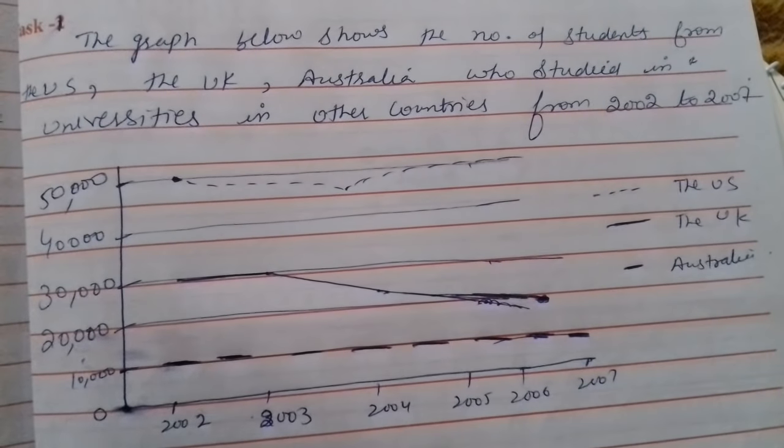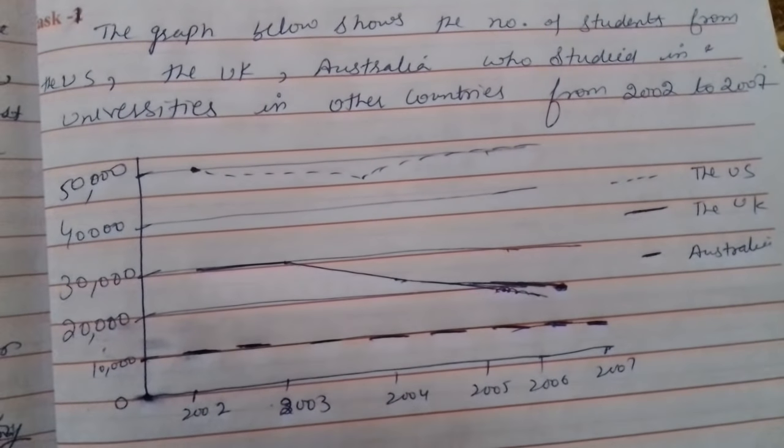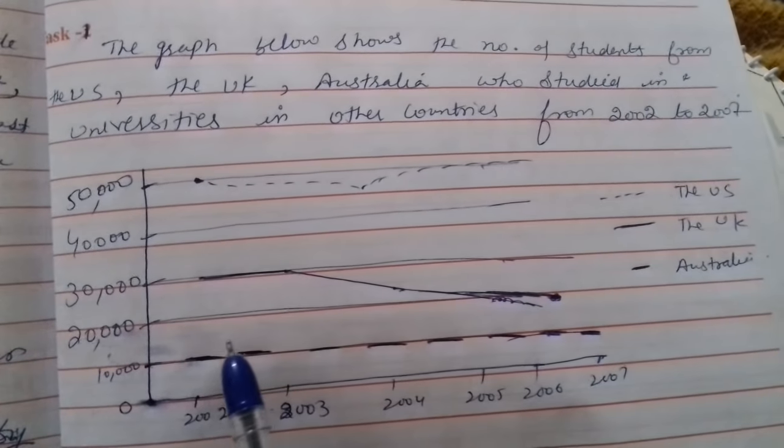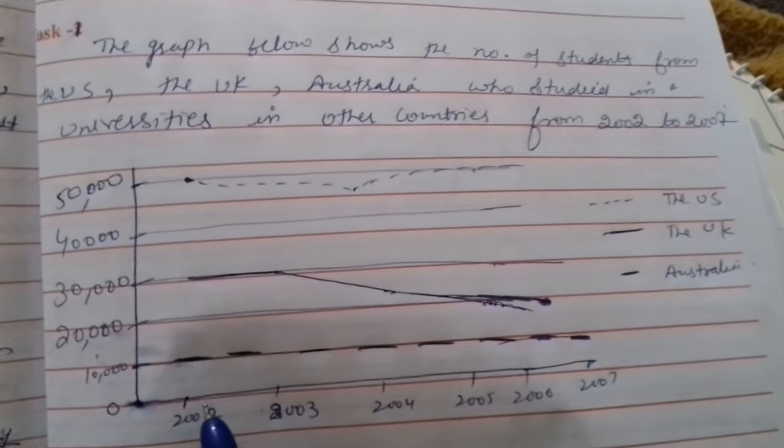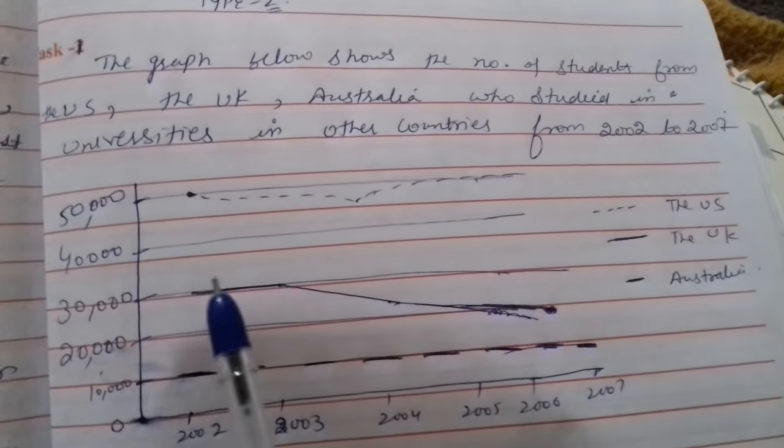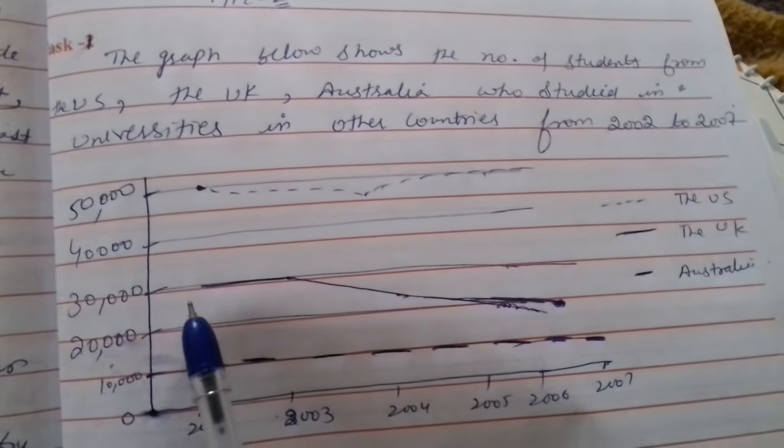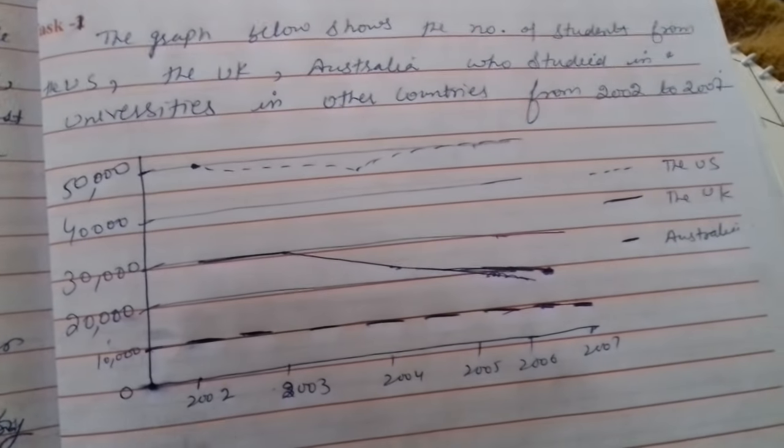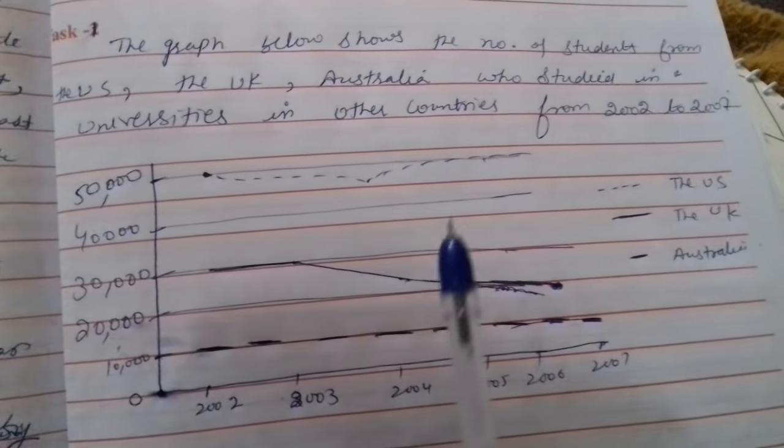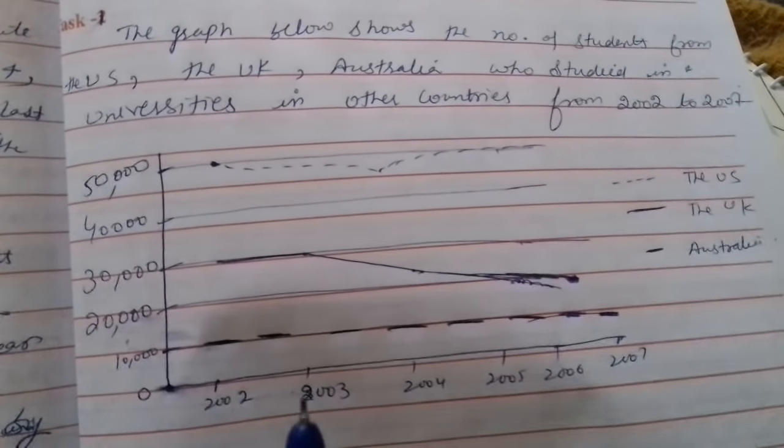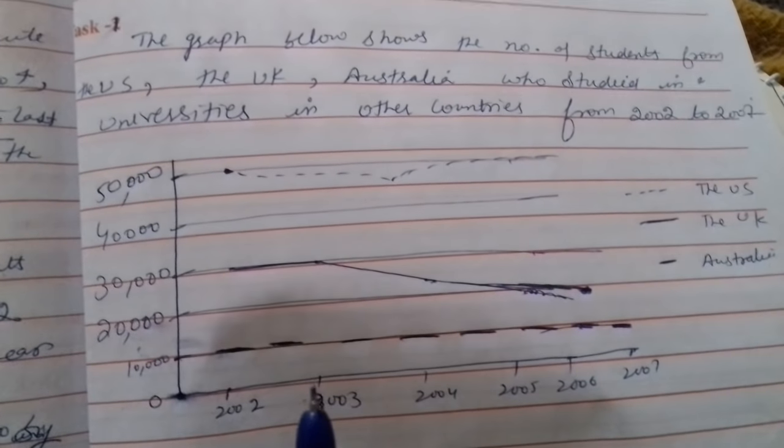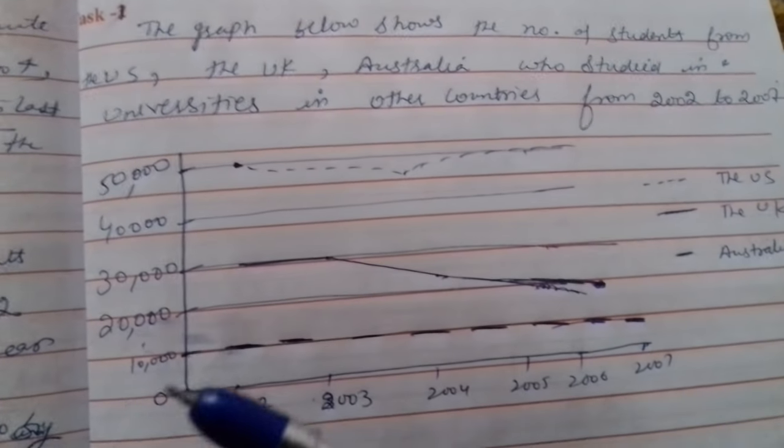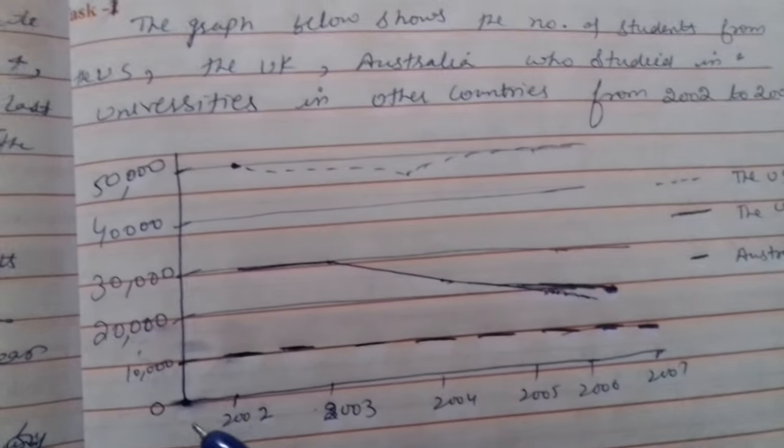Welcome students, in today's video I will discuss Task 1 of the writing module. This is type 2. I have already discussed type 1, which was the bar graph. Today I will discuss line graph. I have not done a simple answer. I will give you a hint. You will try it yourself.